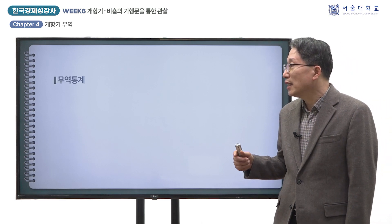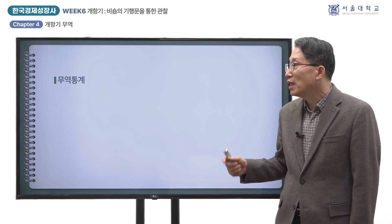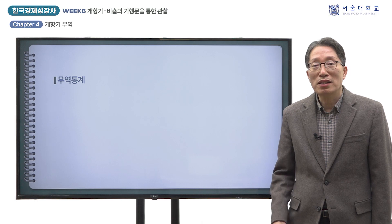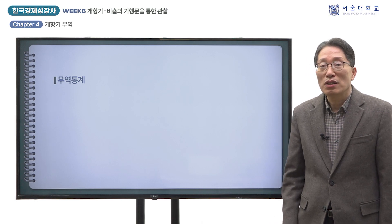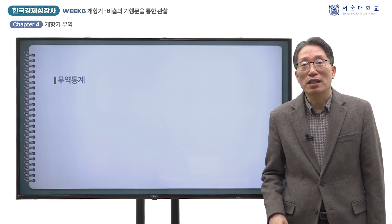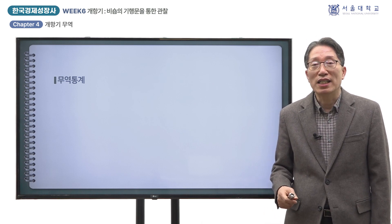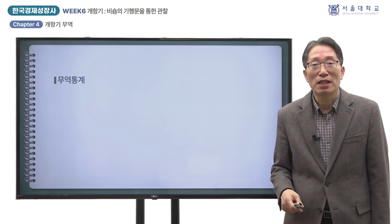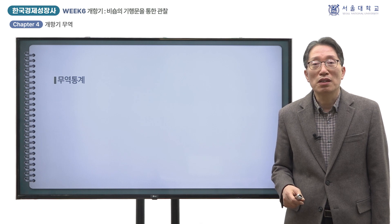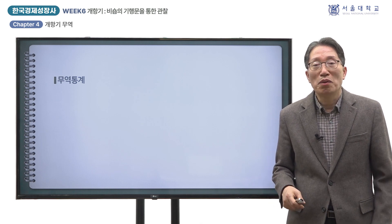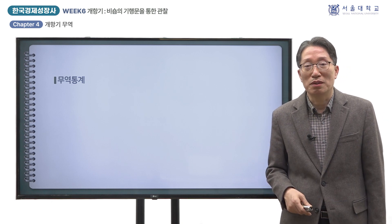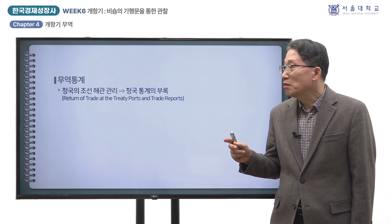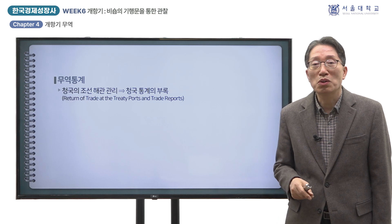무역통계가 이 시기 전국적인 실태를 보여주는 거의 유일한 통계라고 했지만, 통계 작성 기관에 의해 일관된 방식으로 통계가 작성된 것은 아닙니다. 1876년부터 개항장 무역이 시작되었으나 관세를 부과하는 해관이 1884년에 설치되기까지 조선에서 무역통계를 작성하는 기관은 없었습니다. 이 시기 개항장 무역은 일본이 거의 독점하고 있었기 때문에 일본 측의 무역통계로부터 역으로 파악할 수 있습니다.